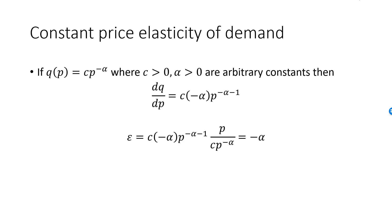To get epsilon, we take this derivative and multiply it by p over q, replacing q with c times p raised to minus alpha. You can see that these c's will cancel.